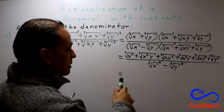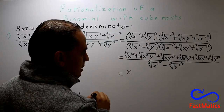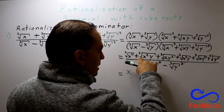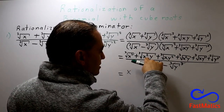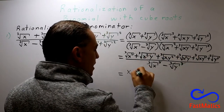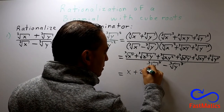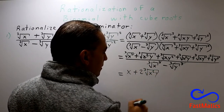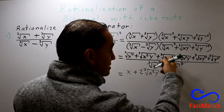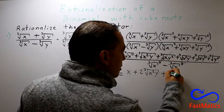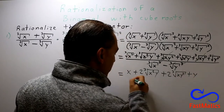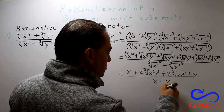So, the final answer is x. After that, the same root plus the same root — that is twice the cube root of x squared y. And after that, plus twice the cube root of x y squared, plus y, over x minus y.